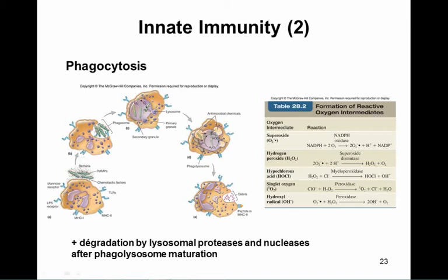The process begins with recognition of bacterial cells by receptors on the neutrophil surface, leading to phagocytosis — the internalization of bacteria. Once phagocytosed, the phagosome matures and this leads to destruction of the bacterial cell.